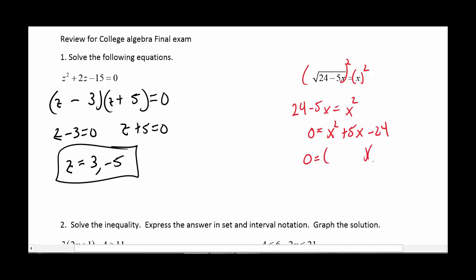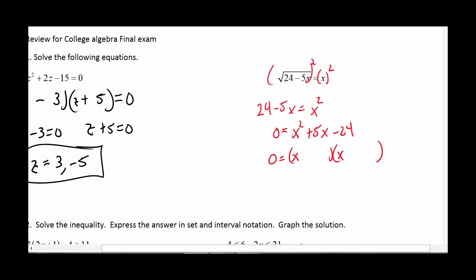And then we're going to try factoring again. So x and x. Let's see, 24, 12 and 2, 8 and 3. Oh, 8 and 3. I like 8 and 3. And I want the 8 to be the positive and the 3 to be the negative. So x minus 3 equals 0 and x plus 8 equals 0. So x is 3 and negative 8.